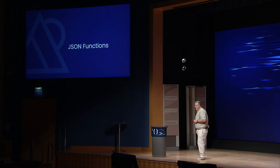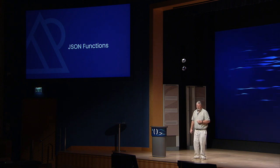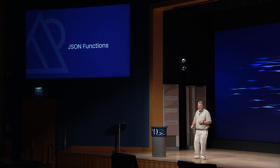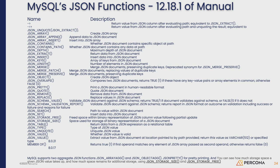JSON functions: with 8.0 there's a whole bunch of new functions added, covered in section 12.18.1 of the manual. This gives you an idea of the various things available — you can get the type of value of the document, there's a pretty printer, things for merging documents, extracting parts of a document, appending arrays, removing arrays — a whole bunch of really useful functions. Unfortunately I only have 25 minutes, so check the manual or my book for more.